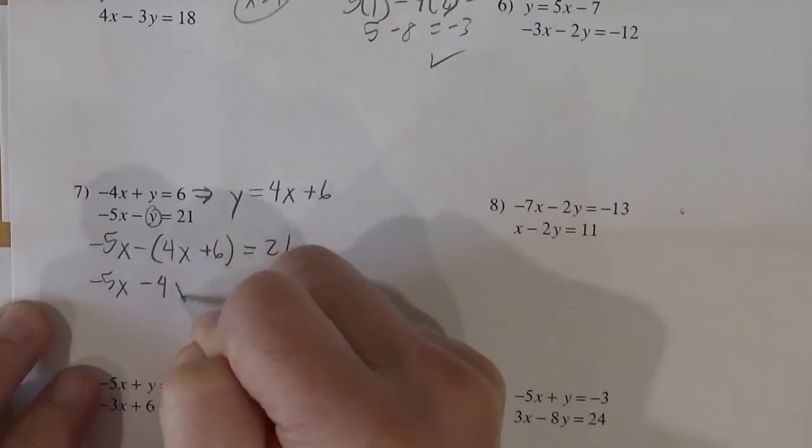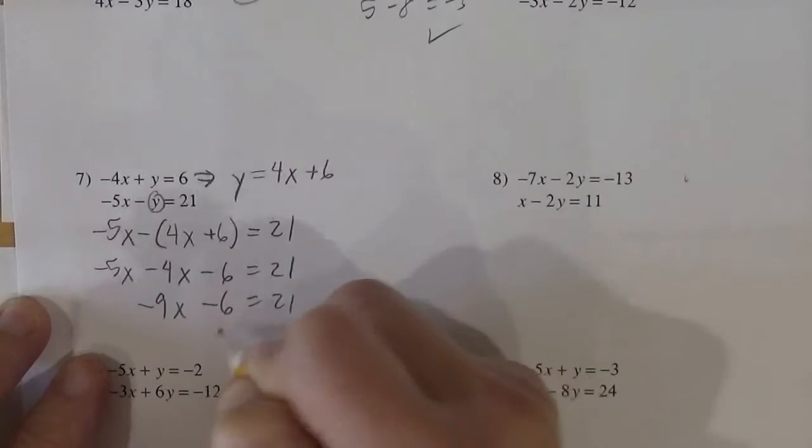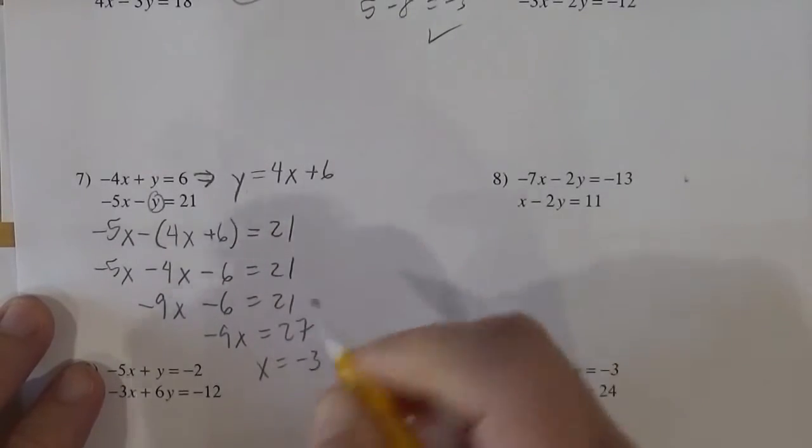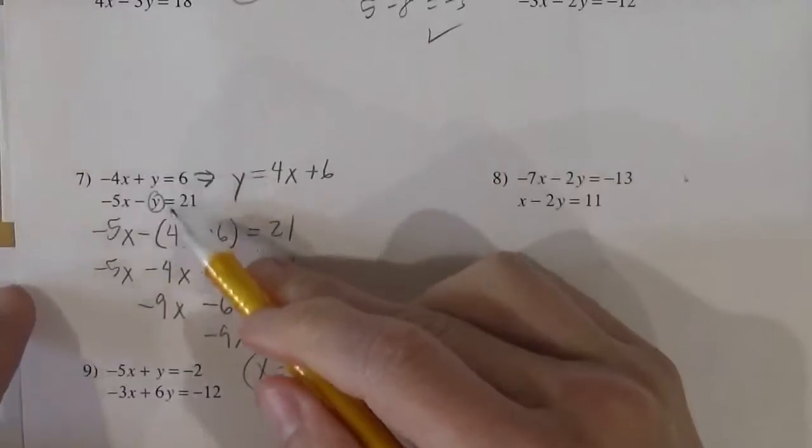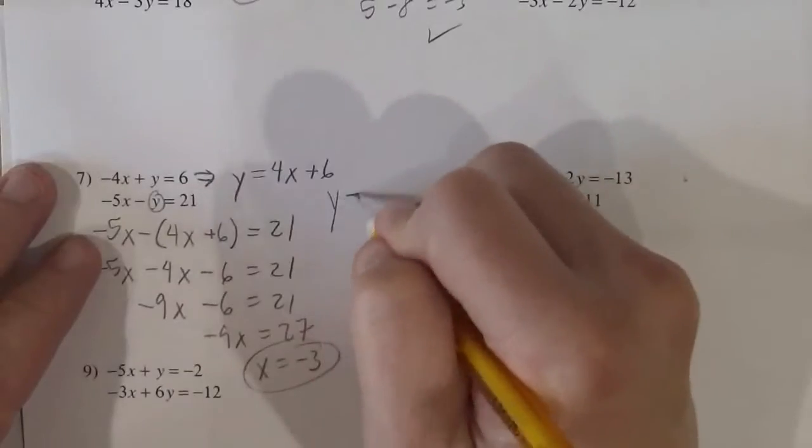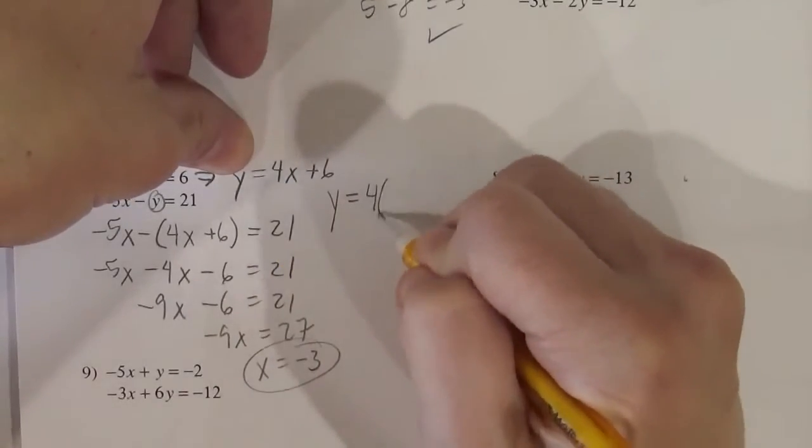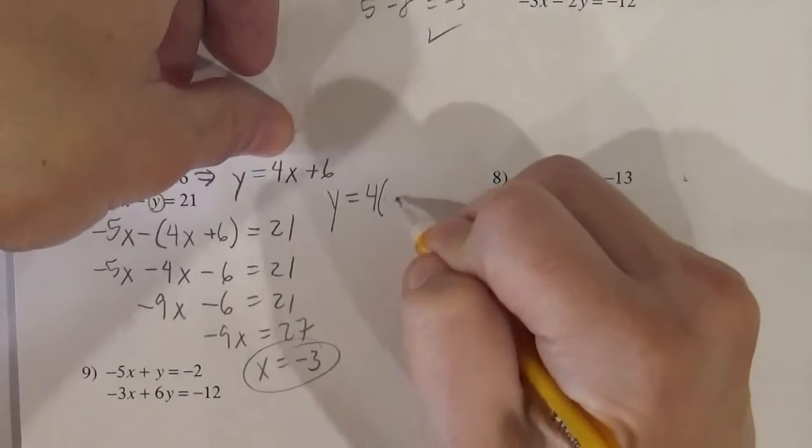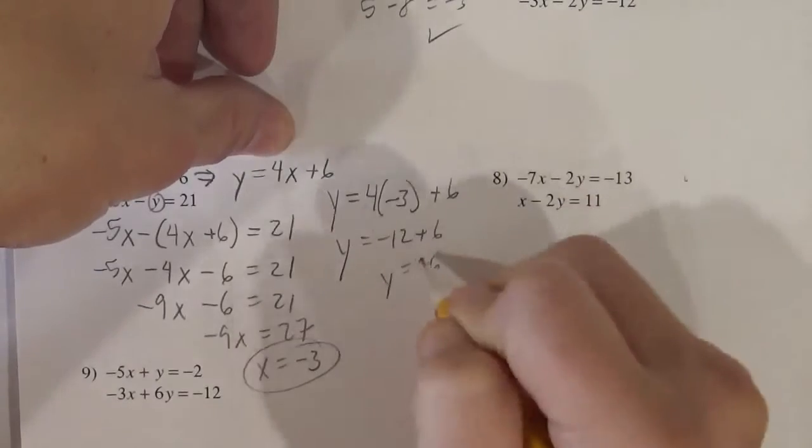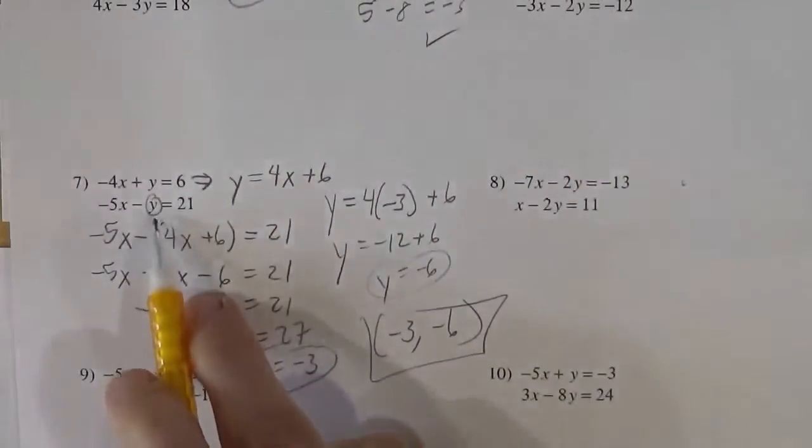So I have negative 5x minus 4x minus 6 equals 21. So negative 9x minus 6 equals 21. So negative 9x equals 27. So x equals negative 3. And then plug that back into either one of these, or that one. Doesn't matter. Every single equation, if you hadn't made a mistake, every single thing you've written is true. So you can plug it back into any one. But I'm thinking this one, where you have the y equals already, is the easiest. So the y will equal 4 times negative 3 plus 6. So negative 12 plus 6. So y is negative 6. So my ordered pair would be negative 3, negative 6. And I leave it to you to check it.